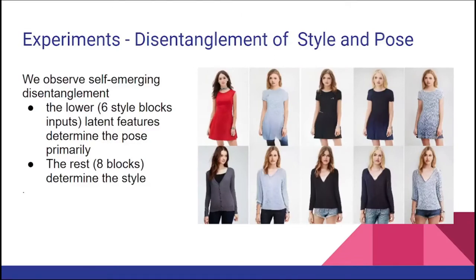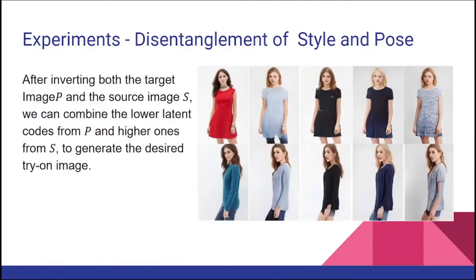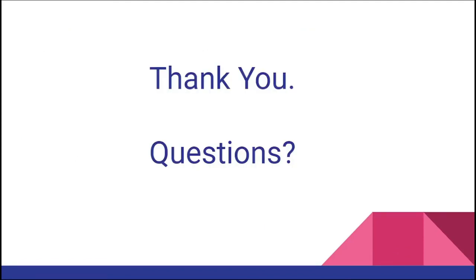This is our final result regarding disentanglement of style and pose. We performed this experiment by mixing latents of different style blocks and found that the lower six style blocks are responsible for the pose of the image, whereas the higher eight blocks are responsible for the style — including the garment, hair color, and face. In the image shown, each row has the same pose while each column has the same garment style, achieved by keeping the lower six blocks' code the same and modifying the upper eight blocks' codes. We can see the same results in this case as well — we are able to preserve the same pose while changing the style. Those are all the results discussed in the paper. Thank you.